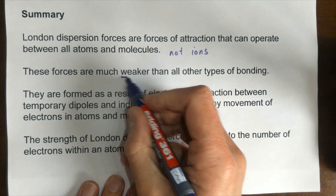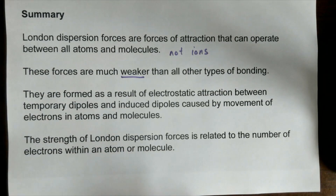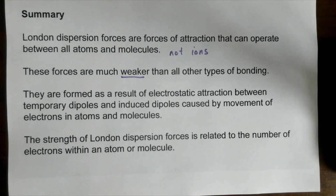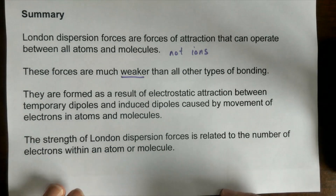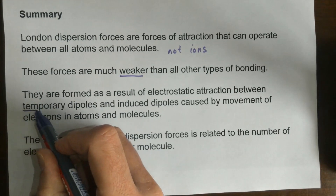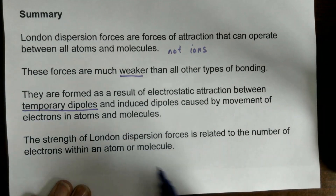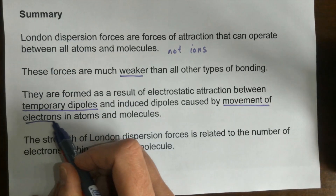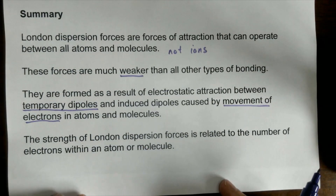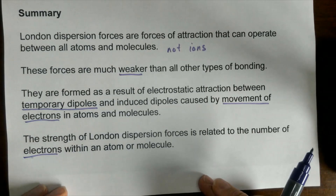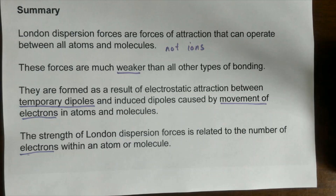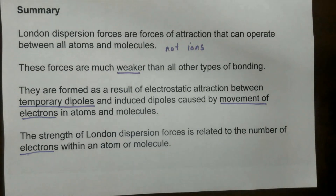Out of the van der Waals forces, such as hydrogen bonds and permanent dipole interactions, London dispersion forces are the weakest you'll come across. When asked to describe how London dispersion forces arise, the key words are temporary dipoles — not permanent dipoles — caused by the movement of electrons in atoms. The strength of the London dispersion forces is related to the number of electrons within the atom or molecule, whether it's an element or a compound, and this in turn affects properties such as boiling point or melting point.